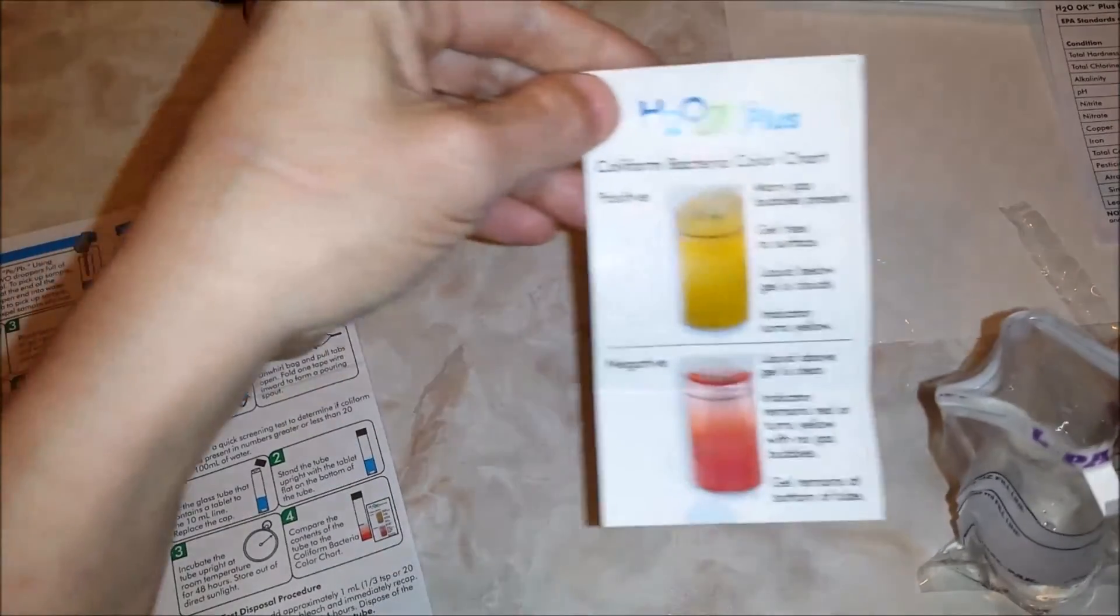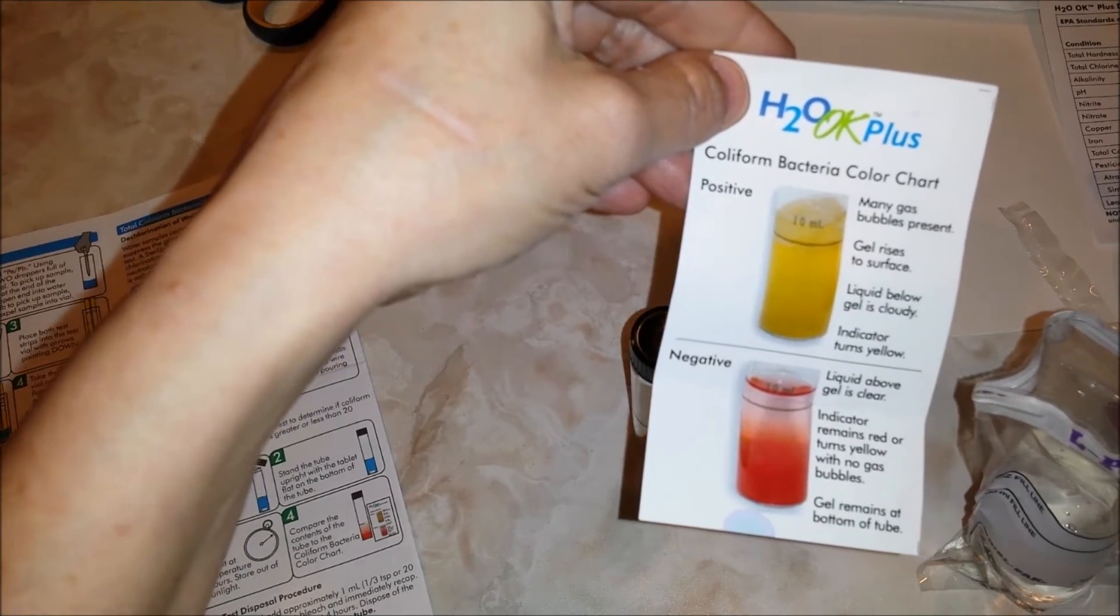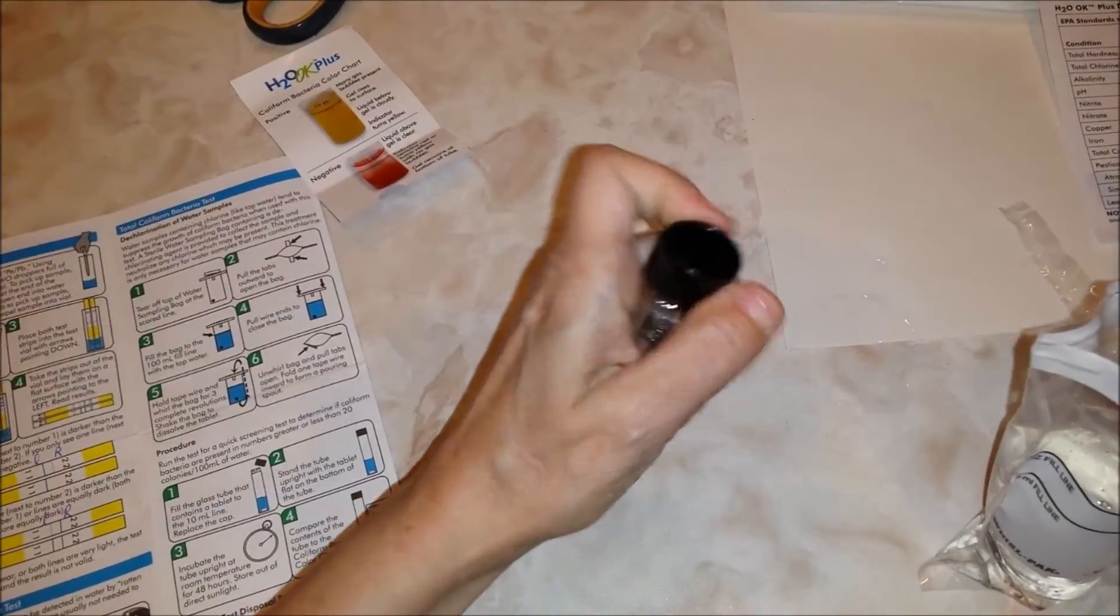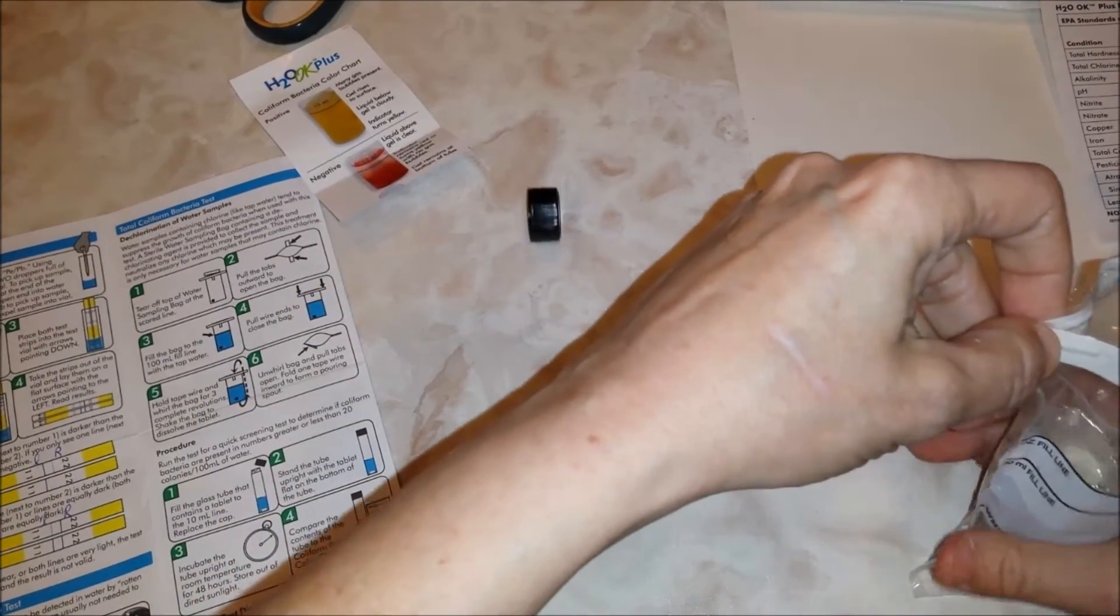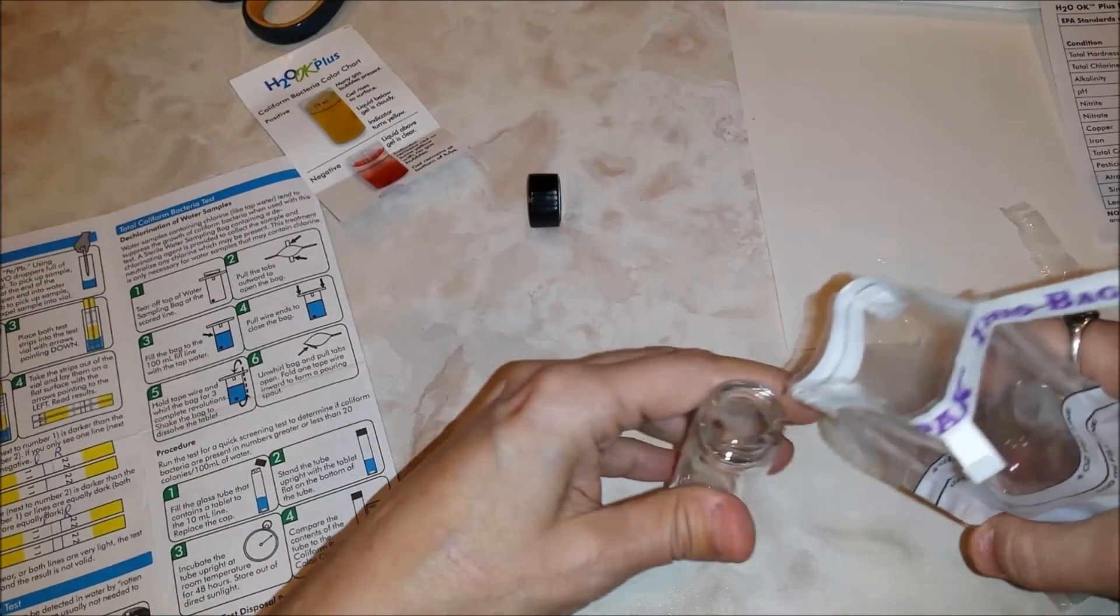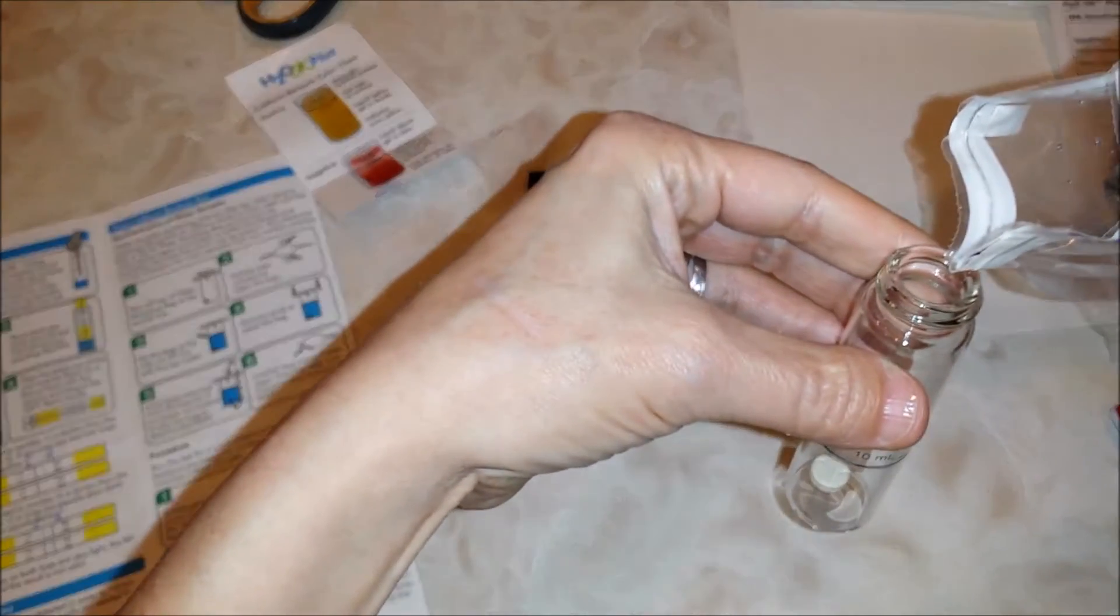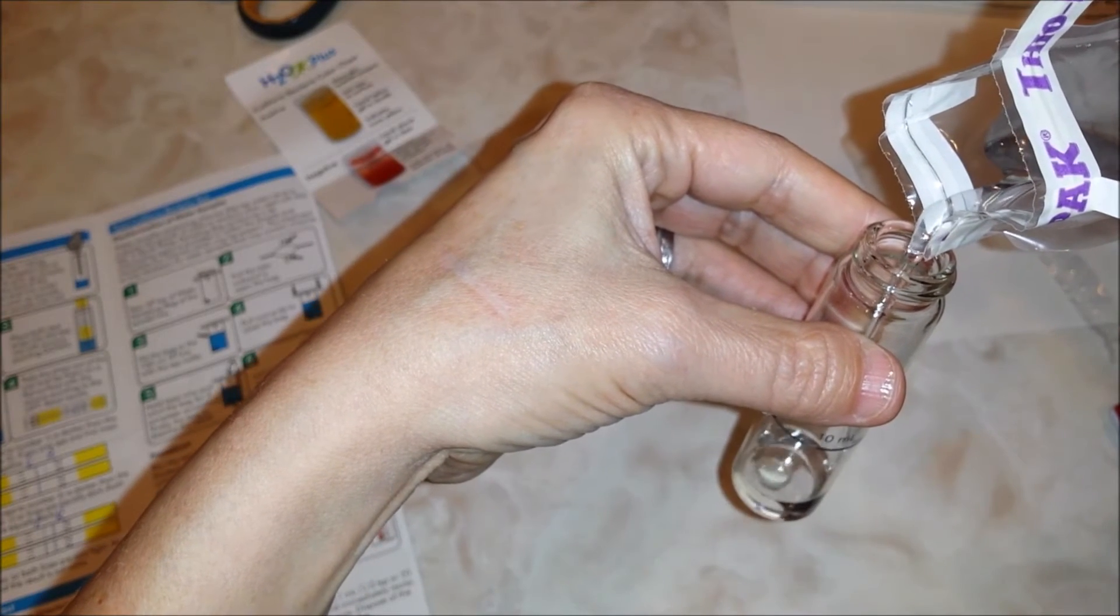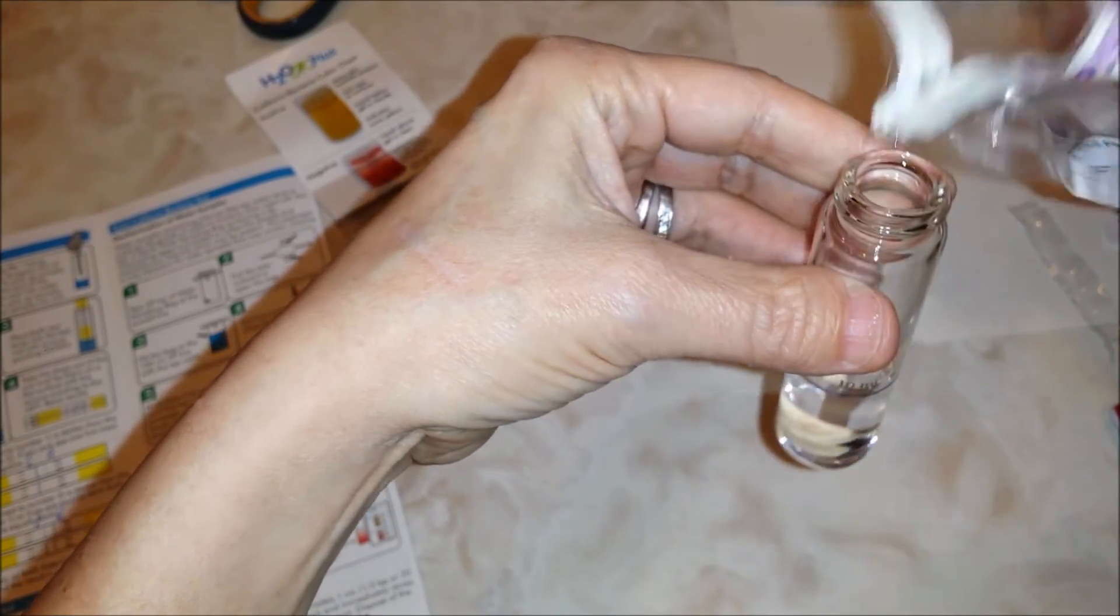We're going to incubate the tube and make sure it stays upright at room temperature for 48 hours, and then we're going to compare. If it's yellow, it's positive. If it's negative, it's going to be sort of pinkish. Now, we only need 10 milliliters. This will be interesting. I'm not real coordinated. It's just not my strong suit. I have worn enough though, so if something spills, it's fine. It's a little over, but that's okay.